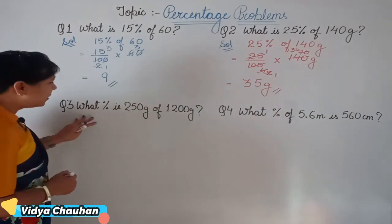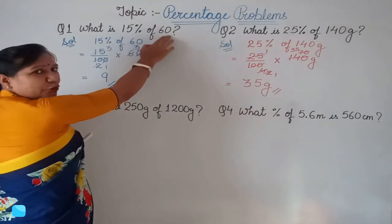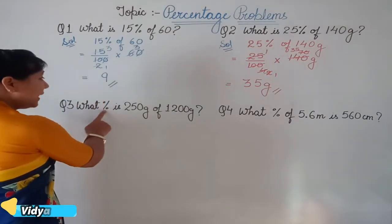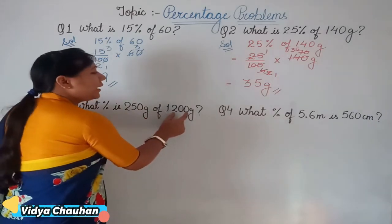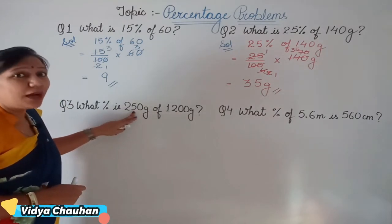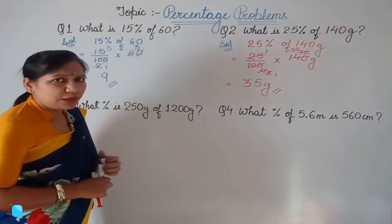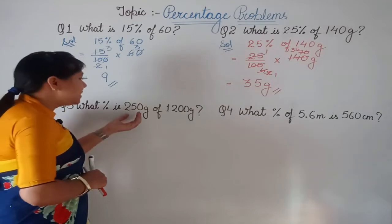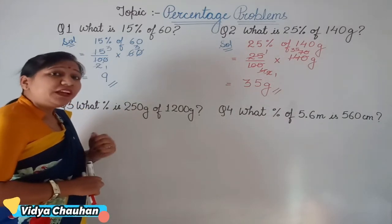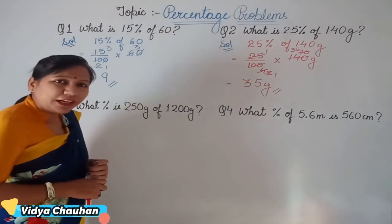Now let's take some questions with a twist — something different is being asked. Earlier, the percentage and total value were given. In these questions, you have to find the percentage. The question says: what percent is 250 grams of 1200 grams? Suppose there are 1200 grams of vegetable in a basket and your mother told you to take out 250 grams. You take it out — now, what percent of the vegetable have you taken out?